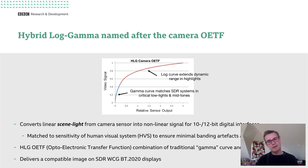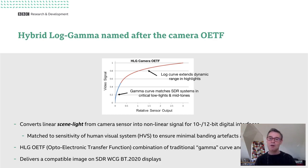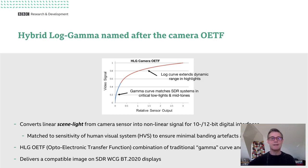Because the lower part of the curve is the same as a conventional SDR camera curve — and that's the part of the signal range most important for our subjective impression of a scene — we're able to take an HLG signal and present it on a conventional wide color gamut SDR display and get a good quality backwards compatible picture. I'll talk more about that in part two of the talk.